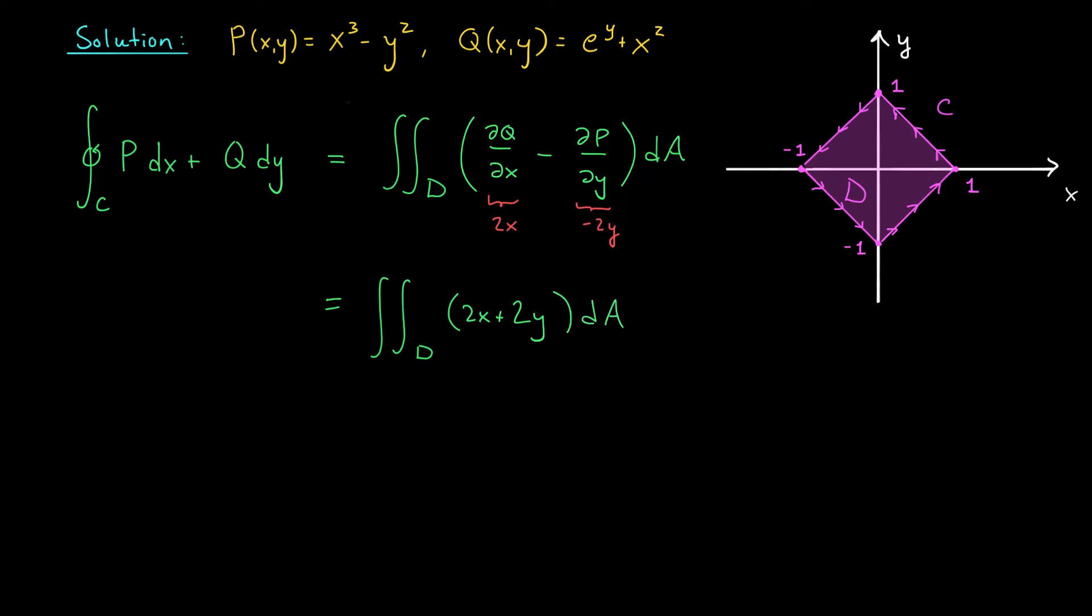Alright, we need to set up this double integral. But look at this thing. This region is neither type 1 nor type 2. So I think we'll need to use a change of variables. We can see that the region D is bounded between the lines y = x+1, y = x-1, y = 1-x, and y = -1-x. So using what you know about change of variables, if you move all the variables in these equations to one side, you'll see that x-y and x+y are both bounded between -1 and 1. So these will be good choices for the definitions of u and v. We'll set u equal to x+y and v equal to x-y.